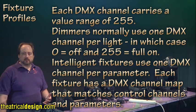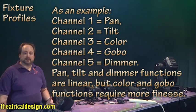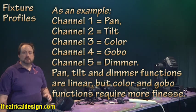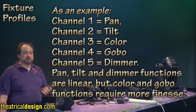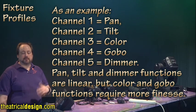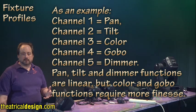Channel 1 equals red, 2 equals blue, 3 equals green. More complex fixtures require more channels because they have more options. For example, channel 1 equals pan, channel 2 equals tilt, channel 3 equals color, channel 4 equals gobo, channel 5 equals dimmer.